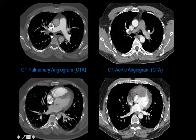Timing also matters in the chest. A CT pulmonary angiography is timed to highlight the pulmonary arteries for PE evaluation, while a CTA aorta is timed slightly later to highlight the aorta. You don't need to order a different test — just tell the radiologist what you're looking for: PE versus aortic dissection, and the study will be tailored accordingly.